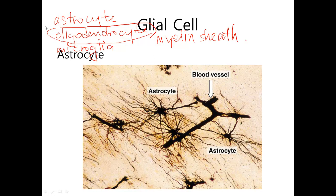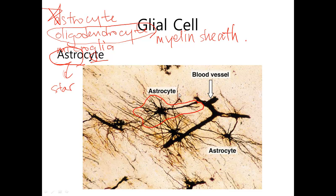Now let's talk about the astrocyte. Astrocyte is named astrocyte because 'astro' means star, and this cell looks like a star, so it is named astrocyte. This black-dyed thing in the image is an astrocyte. The main function of astrocyte is to help neurons, and the main thing it does is to form the blood-brain barrier.